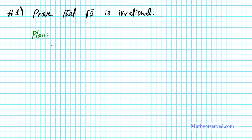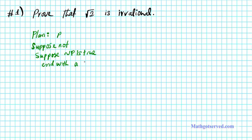How do you prove by contradiction? You have the original statement P that you want to show is true. You're going to make a supposition — you're going to suppose that not P is true. Your goal after making this supposition is to end with a contradiction. Ending up with a contradiction basically implies that not P is false. So if not P is false, then the negation of not P, which is P, must be true.